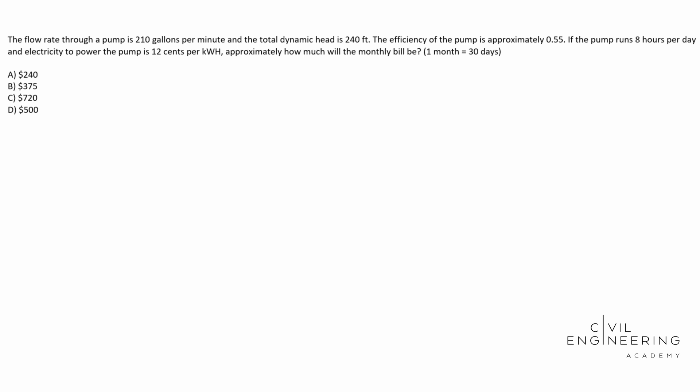So today we have a hydraulics hydrology problem, and in particular this is going to be a pump problem. So here's what the question says. The flow rate through a pump is 210 gallons per minute and the total dynamic head is 240 feet. The efficiency of the pump is approximately 0.55. If the pump runs eight hours per day and the electricity to power the pump is 12 cents per kilowatt hour, approximately how much will the monthly bill be? Then we see one month equals 30 days.